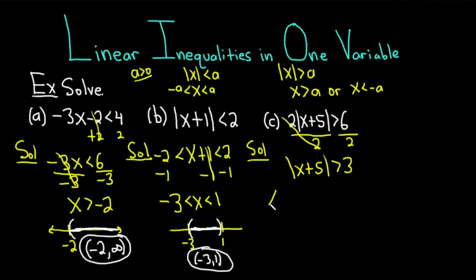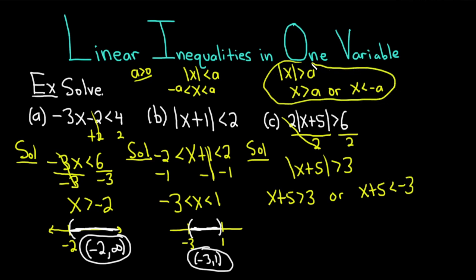Now we can apply the formula. This whole thing here is our x. So we have x plus 5 bigger than 3, or x plus 5 less than negative 3 — just using the formula. You drop the absolute value, put a greater than, keep the number, then flip the inequality and put a negative sign. These are pretty easy to solve: subtract 5 from both sides and we get x bigger than negative 2. Or, subtract 5 from both sides and we get x less than negative 8.